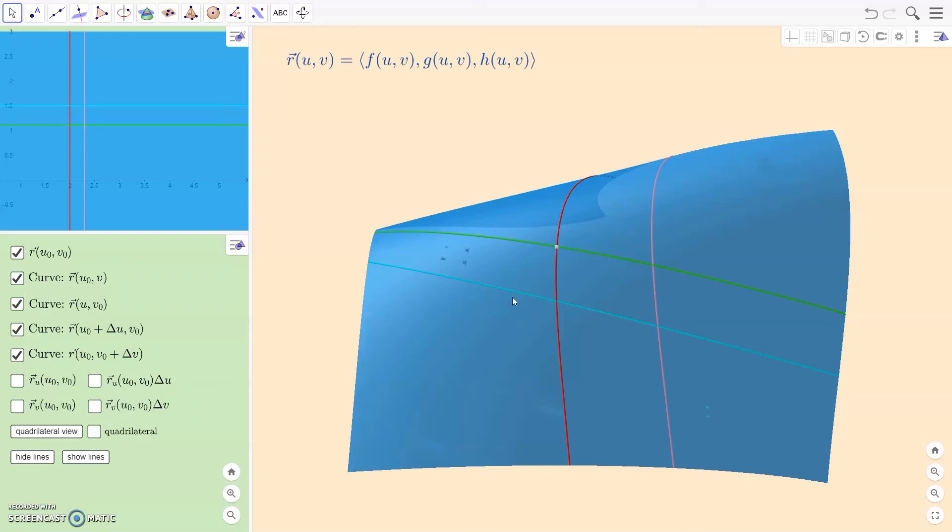So if we think very carefully about what the green curve is here, the green curve, once again, was the curve where we fixed a U, but we let the V change. Okay. I'm sorry. The green curve is where we fixed a V and we let the U change. Okay. So that would be this curve here.